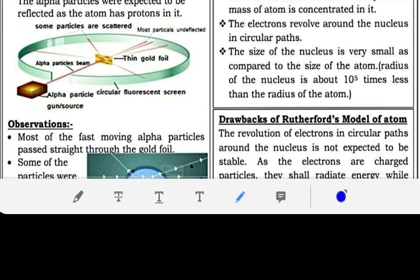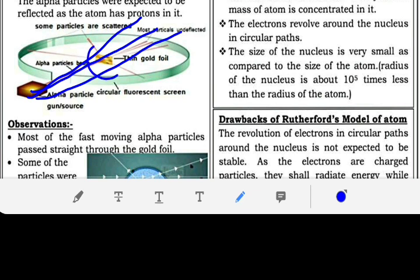In this way, alpha particle bombardment happened. Most passed through, in the middle there is the gold foil, and out of 12,000, one bounced back, and very few were deflected.